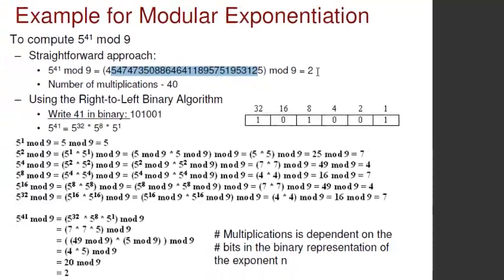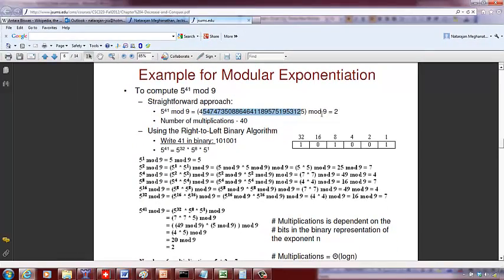Now we are going to make use of this fact: if you divide by 9, the remainder is going to be between 0 to 8 — it's not going to be 9 or more. So we are going to use this to reduce the computational overhead.